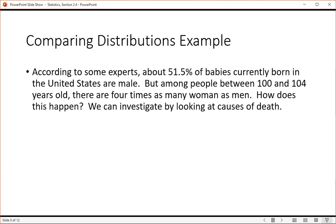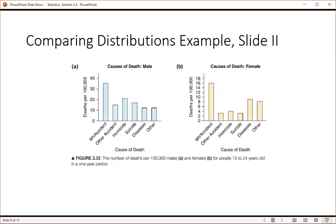According to some experts, about 51.5% of babies currently born in the United States are male. But among people between 100 and 104 years old, there are four times as many women as men. How does this happen? So what we can do to figure that out is we can investigate by looking at causes of death.